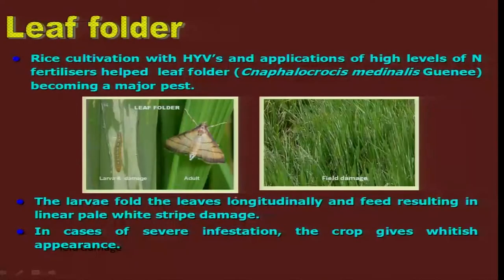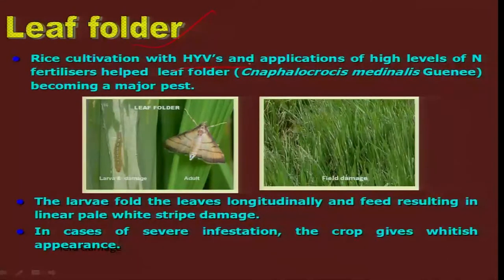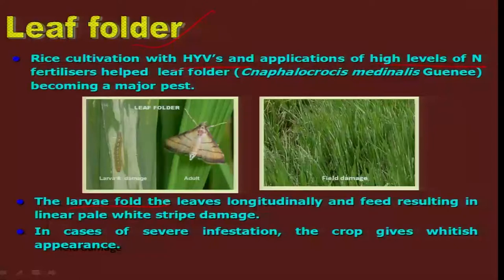The next important pest in low-lying and irrigated areas is leaf folder, Cnaphalocrocis medinalis, particularly in high yielding varieties where there is a high level of nitrogenous application. The larva is the damaging stage — they fold the leaves longitudinally and feed on the green matter, resulting in a whitish appearance on the paddy plants.